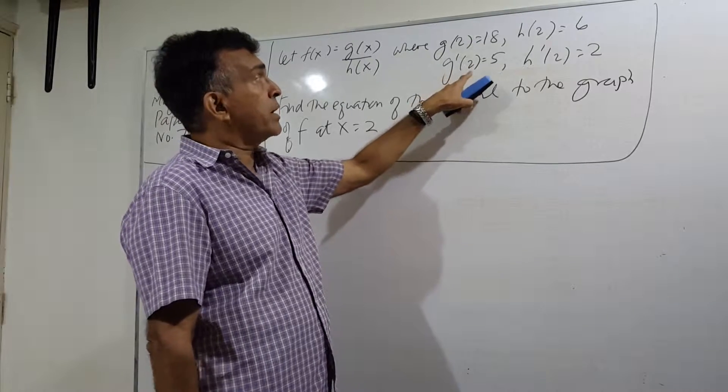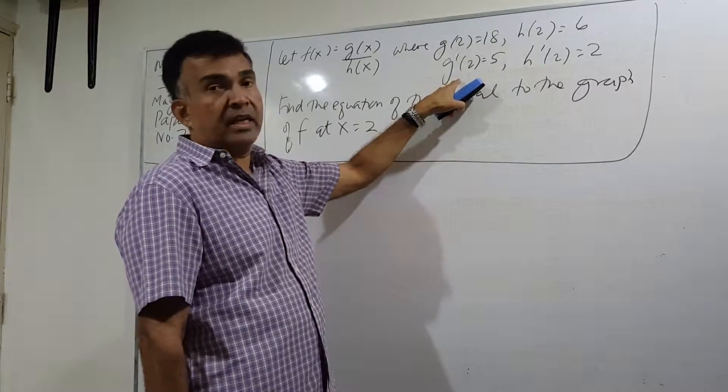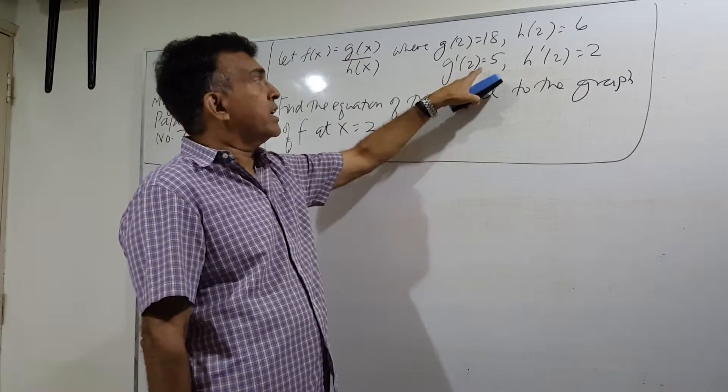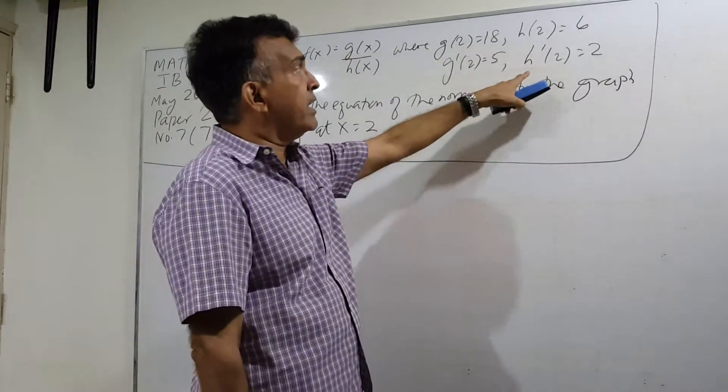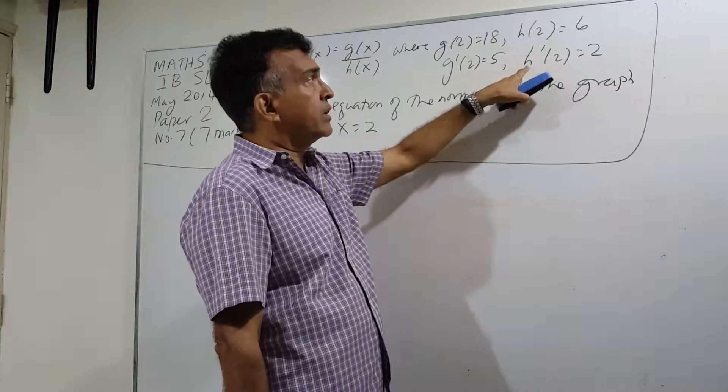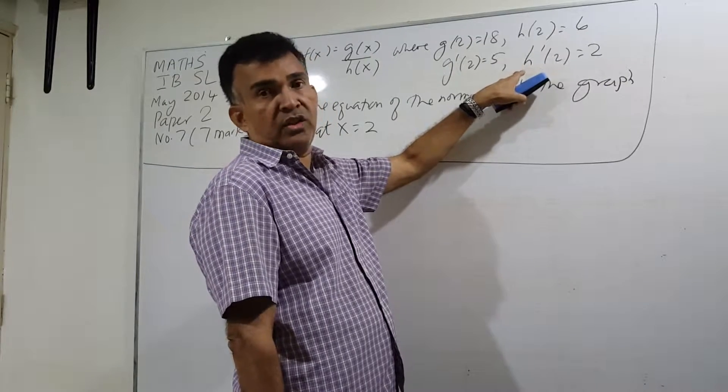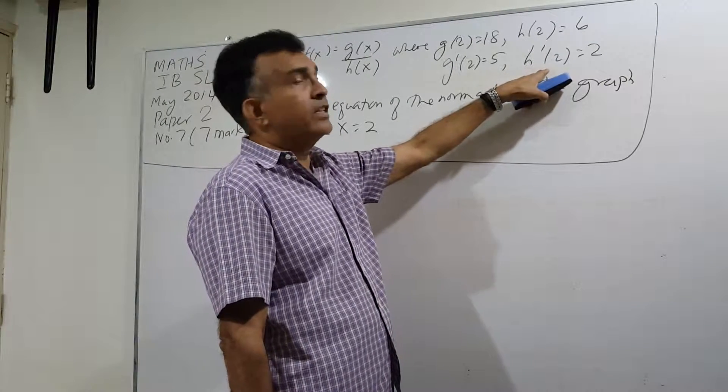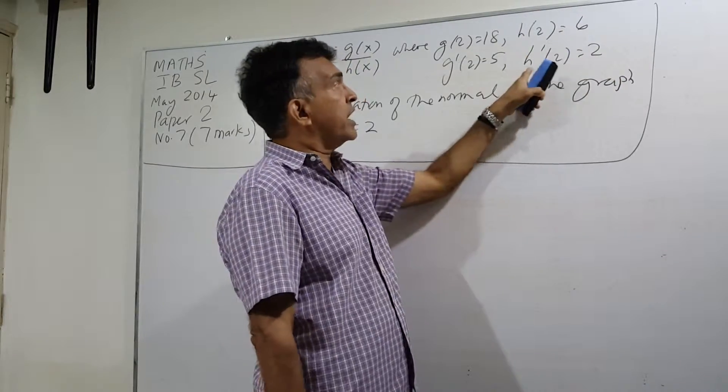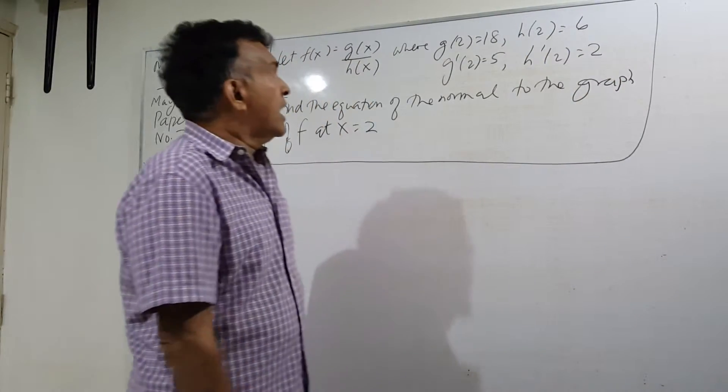g prime 2 equals 5 means that the derivative of g when x equals 2 is 5. And h prime 2 equals 2, which means that the derivative of h at x equals 2 when you evaluate it you'll get 2.